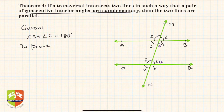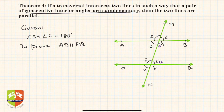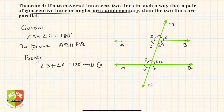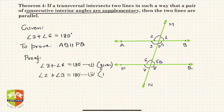To prove: AB is parallel to PQ. In the previous theorem, AB was given as parallel to PQ and we proved angle 3 plus angle 6 equals 180 degrees. In this converse, angle 3 plus angle 6 equals 180 degrees is given, and we must prove AB is parallel to PQ. We'll use previously learned theorems. Angle 3 plus angle 6 equals 180 degrees — this is statement one, given. Also, angle 2 plus angle 3 equals 180 degrees, because they form a linear pair — this is statement two.